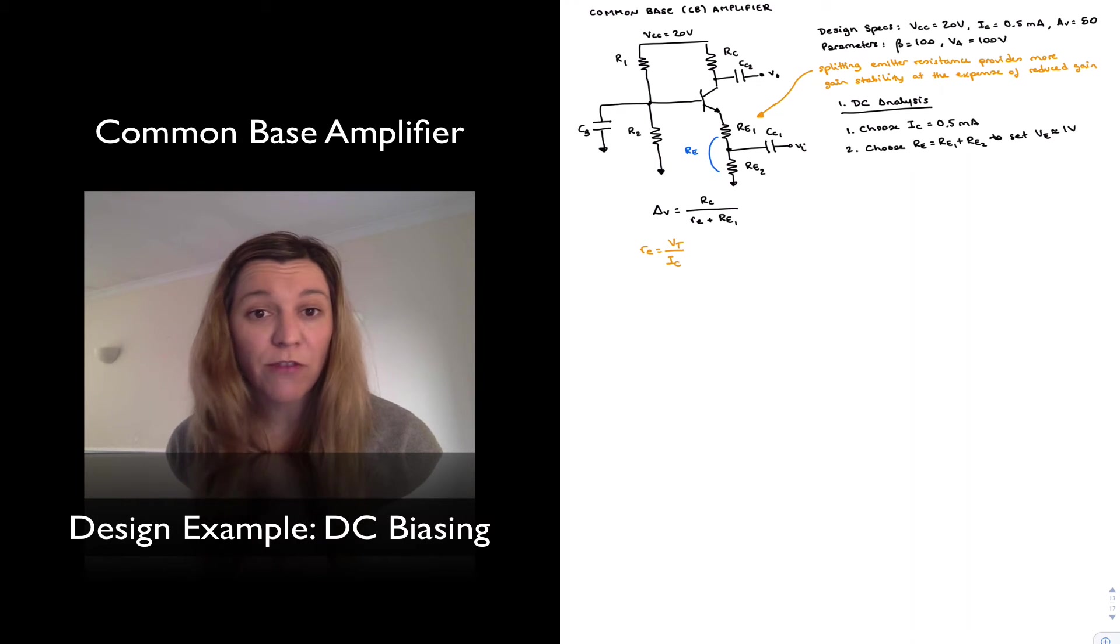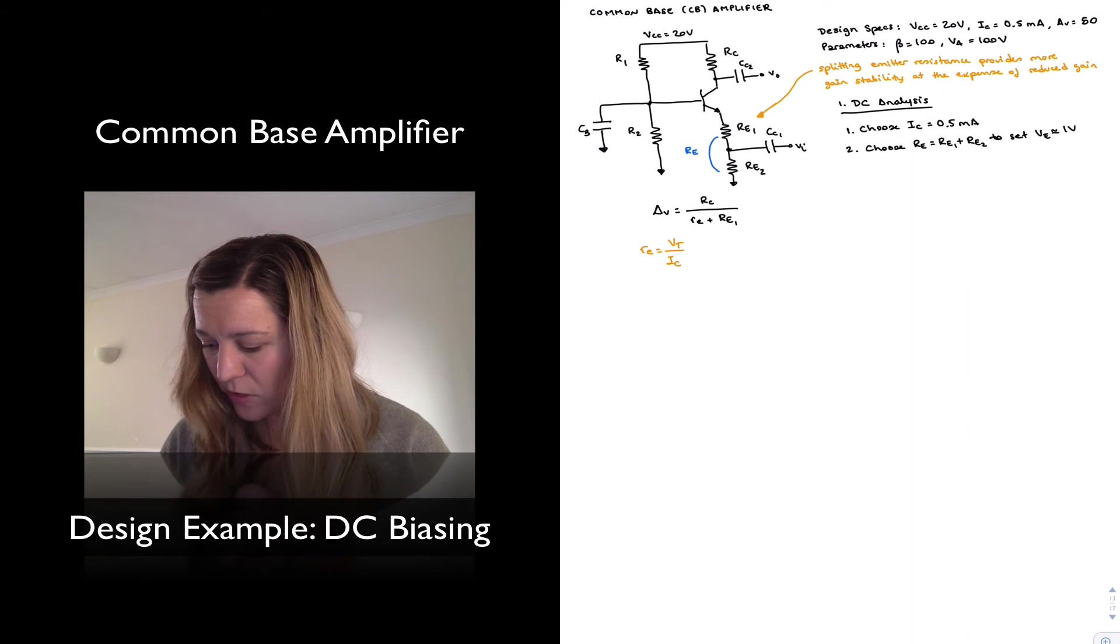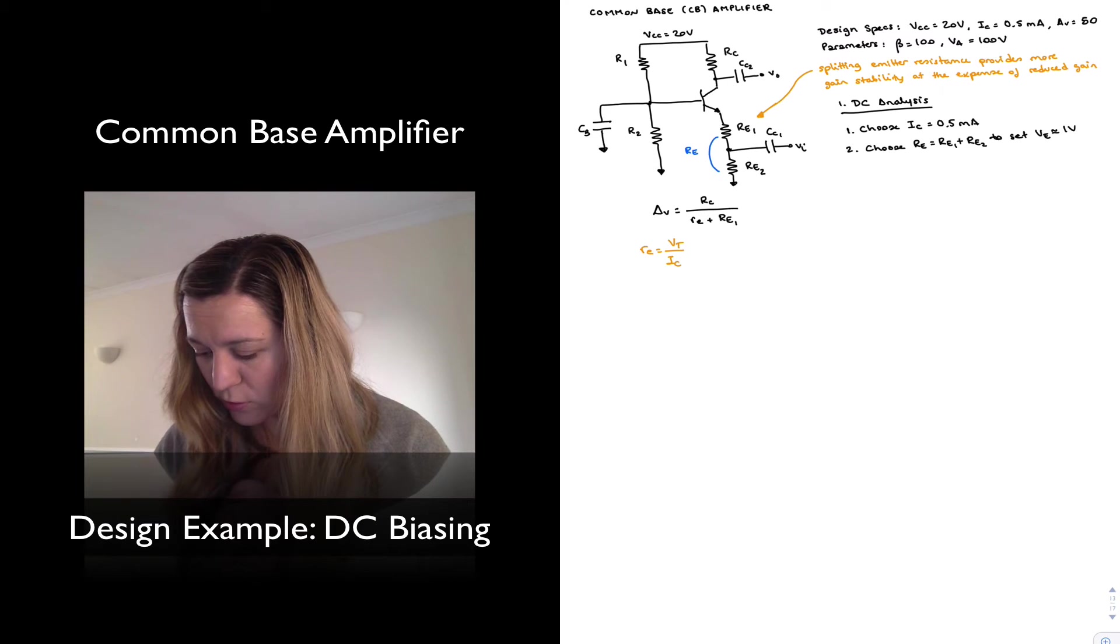And so we play this trick for the common emitter amplifier, and for the four-resistor voltage divider biasing network, to set the VE sufficiently large to make the circuit both beta and temperature stable. And so let's do one volt.